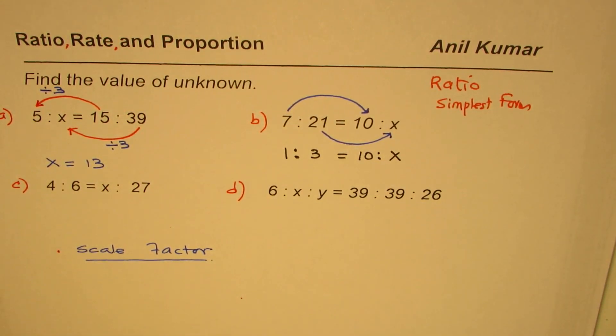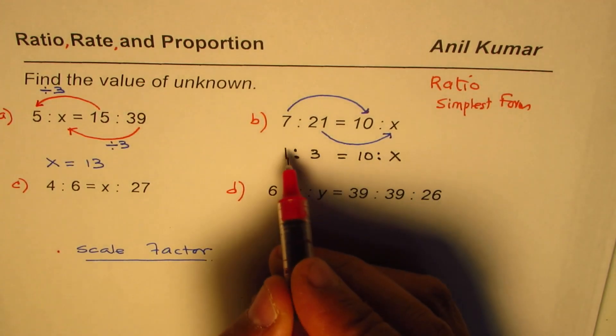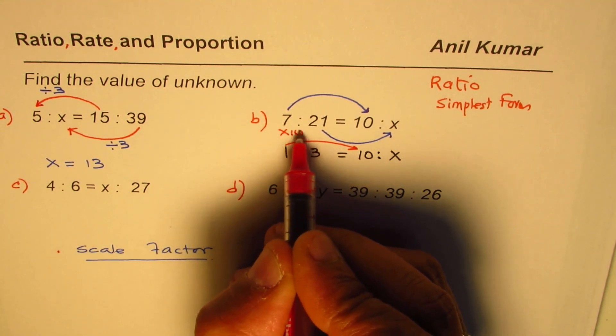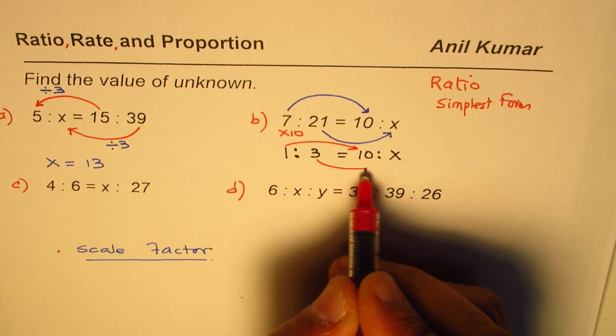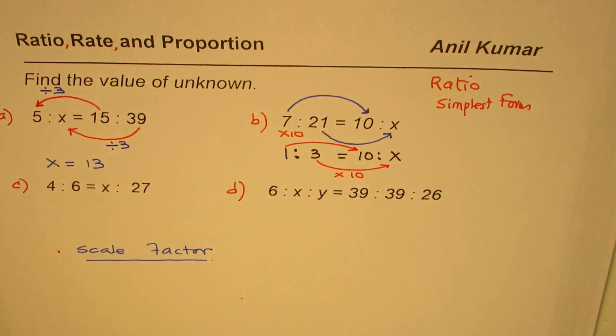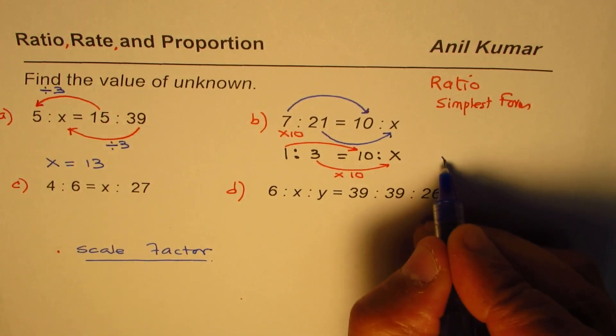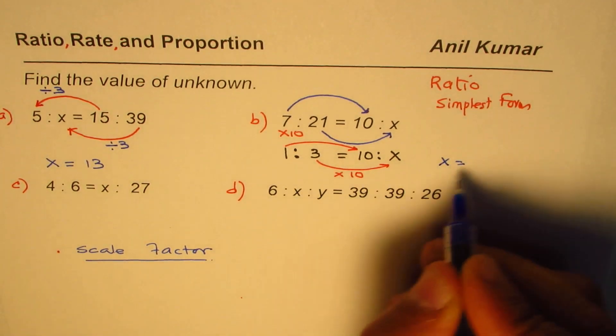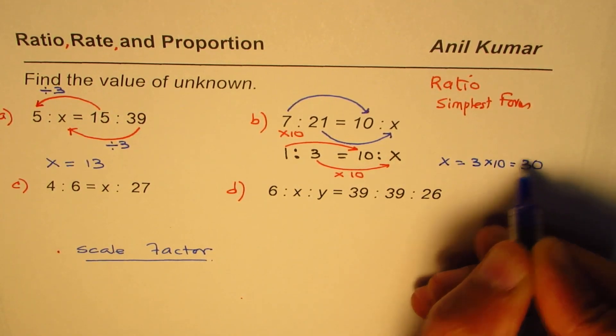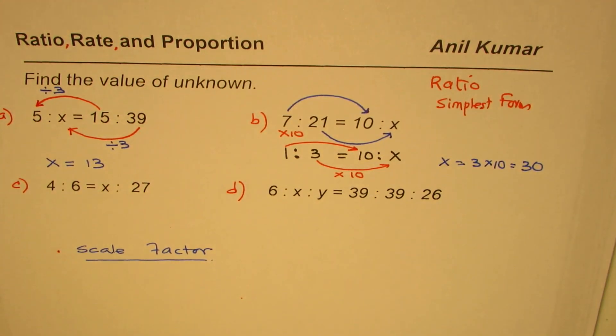Now 1 is to 3, and from here let's go to 10 is to x. It is after all the same ratio. Now I think it is easier if I try it now. Then going from 1 to 10 is kind of times 10, okay? So if I do 3 times 10, I should get x. So the value of x for us is x equals to 3 times 10, which is 30. So x is 30 for us.